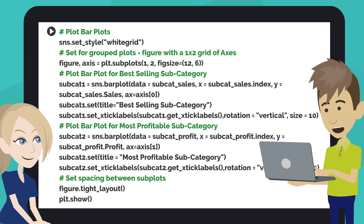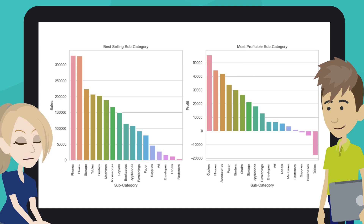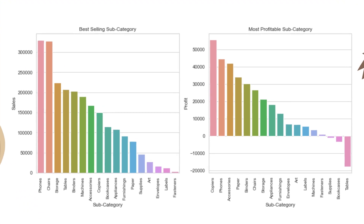Click on the play button or hit Shift+Enter. We can now see bar plots for the best-selling subcategory and most profitable subcategory.